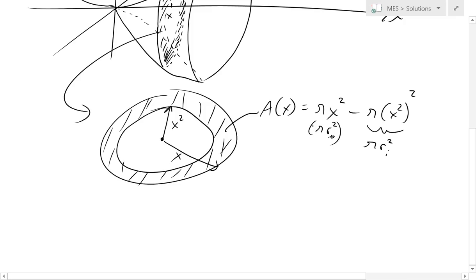So now we'll get π, we'll take the π out. Pi times x² minus x⁴, and that is our area right there.